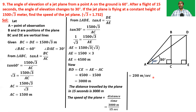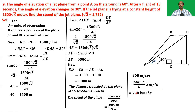That is the speed of the jet plane. Usually we denote the speed of aeroplanes in kilometers per hour. For that we multiply 200 by 18/5. So 200 × 18/5 equals 720 kilometers per hour. The speed of the jet plane is 720 kilometers per hour.